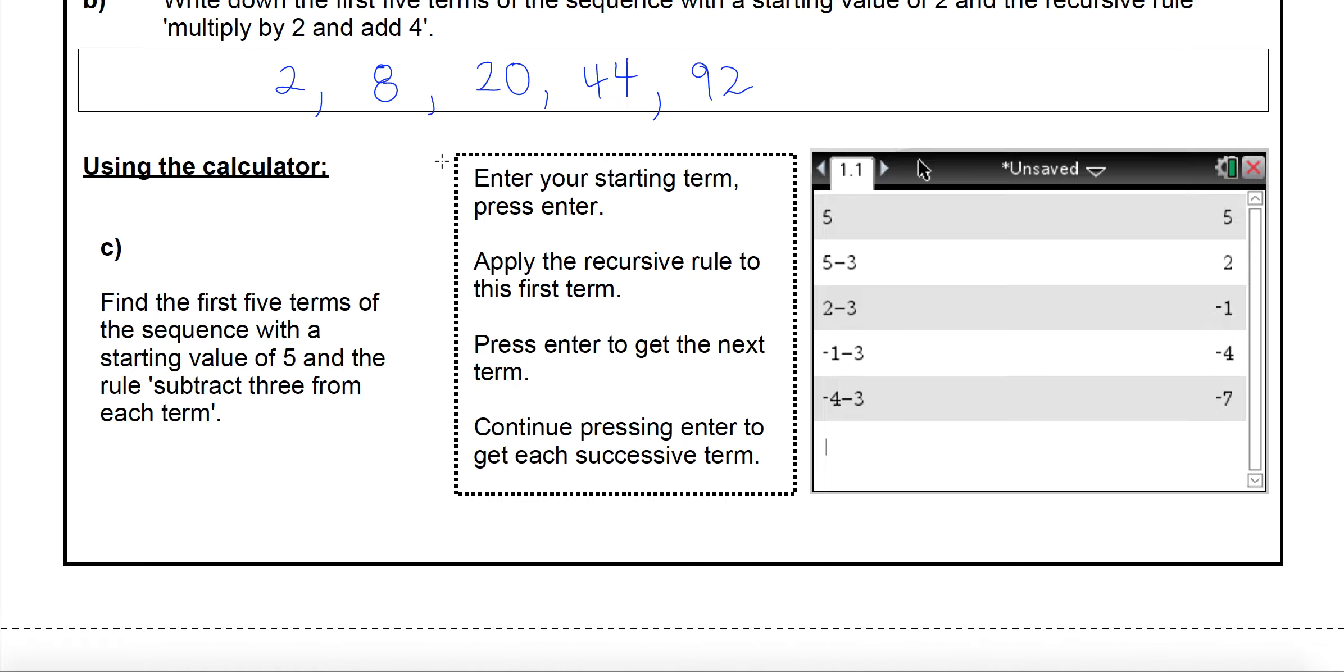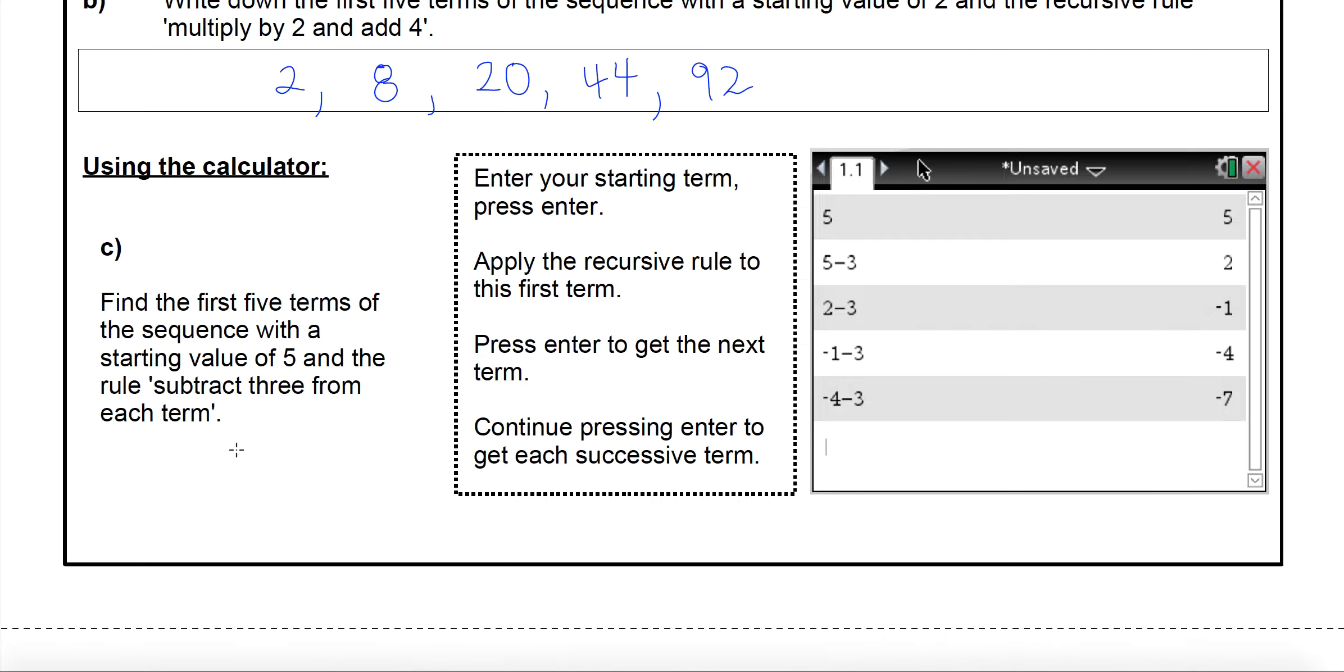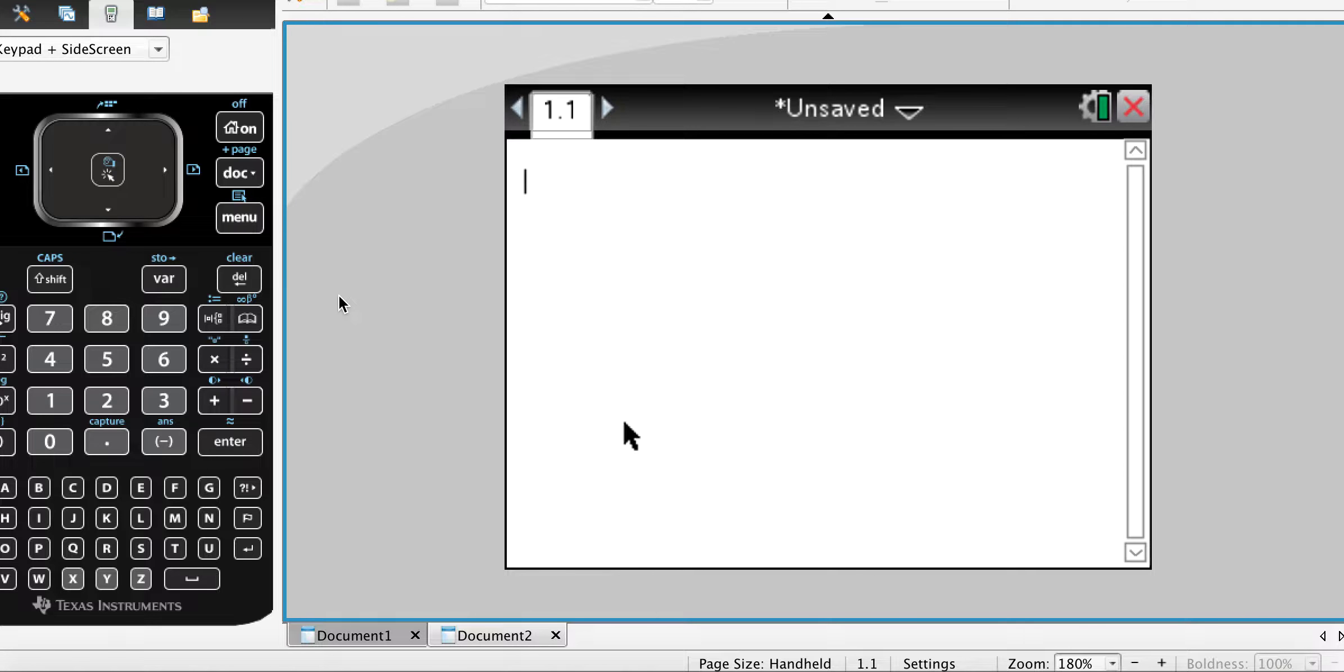Now what we can do is use our calculator to generate sequences. It's good to do this particularly when you have much more complicated rules that you're not really going to be able to do in your head as easily. We're going to start with a value of 5 and our rule is to subtract 3 to get the very next term. You'll see a screenshot of what it's going to look like. First enter in your first term, put the number in and press enter, and you'll see that it comes up on the right hand side over here.